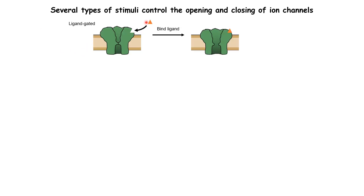What are the stimuli that control the opening or closing of ion channels? The first type are small molecules called ligands that can bind to ion channels — these are ligand-gated ion channels. If a ligand binds to the channel, it interacts with amino acids on the channel, resulting in a change in the 3D conformation of the protein, causing the channel to go from a closed state to an open state or vice versa. These ligand-gated ion channels are found commonly in neurons: when neurons communicate with each other they release neurotransmitters, and some of these neurotransmitters act as ligands, binding to ligand-gated ion channels on other neurons and resulting in changes in their activity.